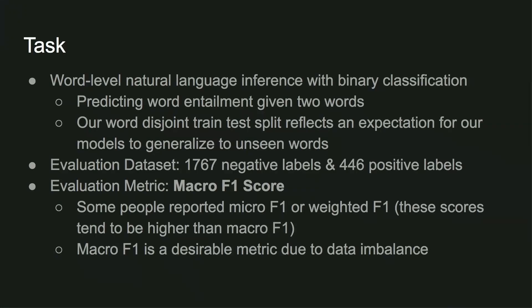Hi everyone. We're going to start the Bake Off 4 report. The task for this Bake Off was word-level natural language inference with binary classification. Basically, we want to be predicting word entailment given two words. We had a disjoint train and test split, which reflects our expectation that we want to be able to generalize on unseen words and vocabularies.